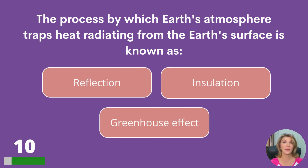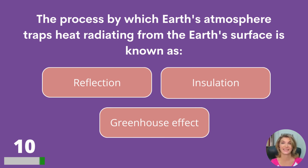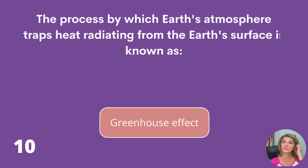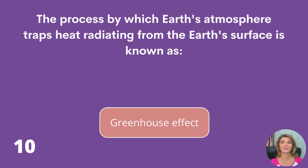The process by which Earth's atmosphere traps heat radiating from the Earth's surface is known as reflection, insulation, or the greenhouse effect? The greenhouse effect.